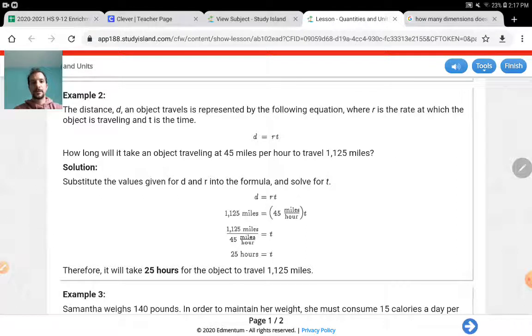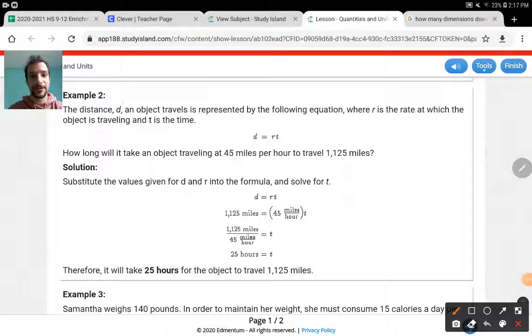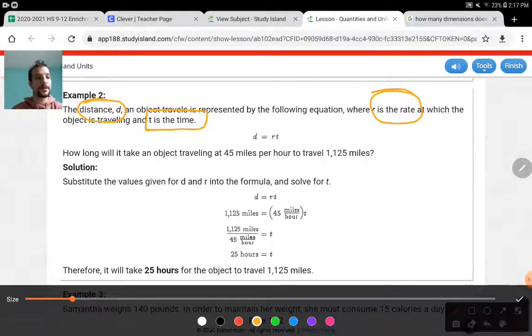Example two, the distance, which is D. So this is good because it tells me what letter is what. Distance and D is the same thing. When I see a distance in my question, like 5 kilometers, 20 miles, I plug it in for D. An object travels is represented by the following equation, where R is the rate. R is my rate. I don't know what rate it is. But rate means a number divided by another number. And T is the time. So I have three letters with their definitions.